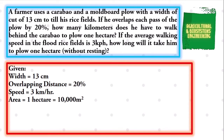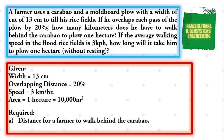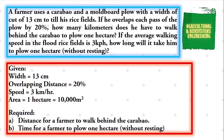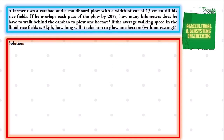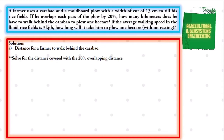The required in the problem are the following. First, the distance for a farmer to walk behind the carabao. And second, the time for a farmer to plow one hectare without resting. After identifying the given and the required in the problem, we begin solving our required values. We first solve for the value of the distance for a farmer to walk behind the carabao. The first step is to solve for the distance covered with the 20% overlapping distance.